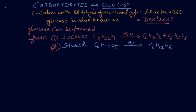Today's topic is carbohydrates. In carbohydrates we have glucose, fructose, sucrose, maltose, and lactose. We are going to discuss glucose first. Glucose has the general formula C6H12O6. It has six carbon atoms with an aldehyde as a functional group, so it is known as aldo hexose. It is also commonly known as dextrose.